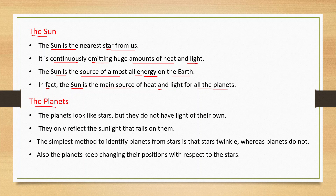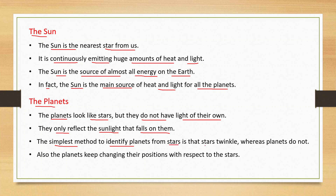The planets look like stars but they do not have light of their own. They only reflect the sunlight that falls on them. The simplest method to identify planets from stars is that stars twinkle whereas planets do not. Also, the planets keep changing their positions with respect to the stars.